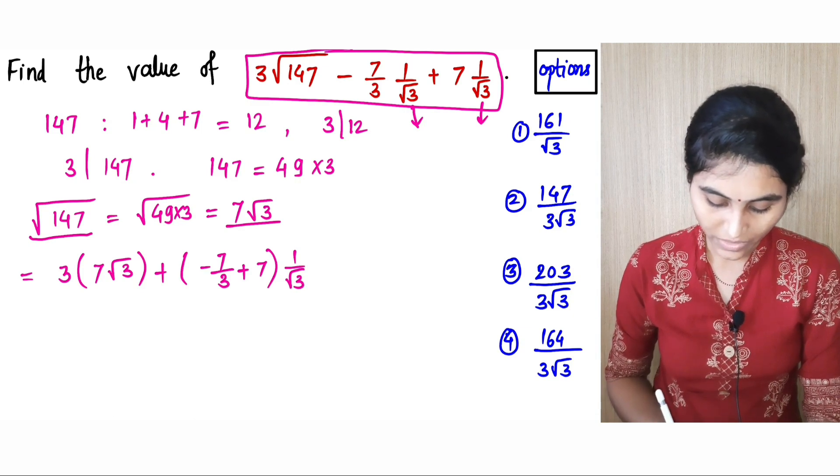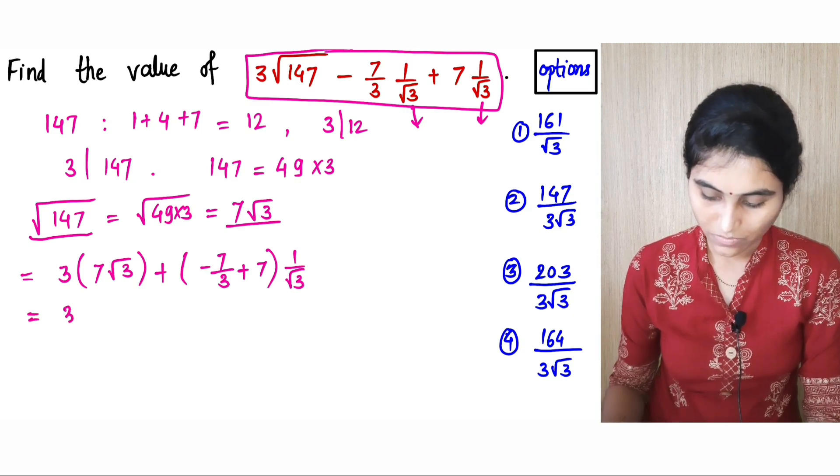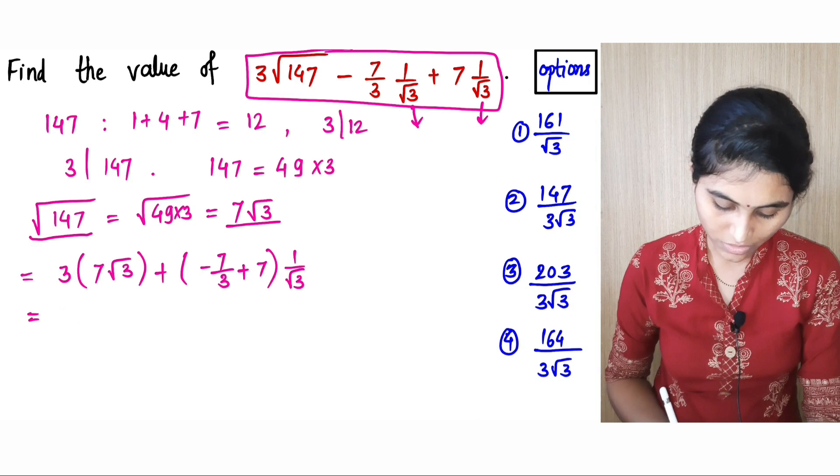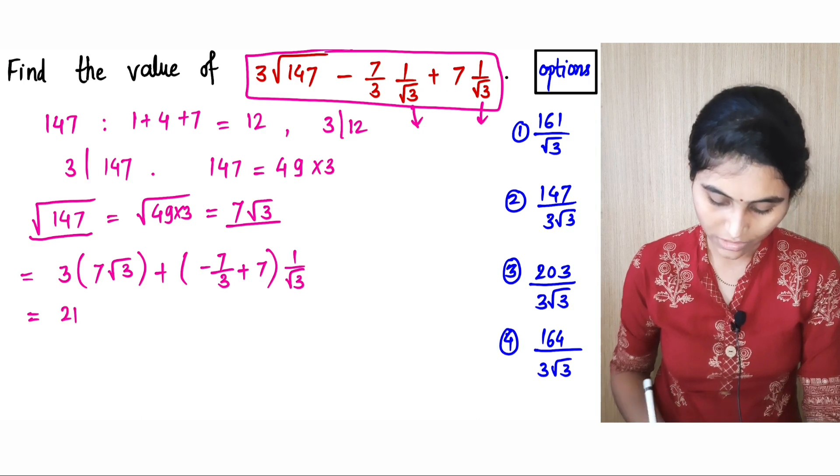Which is equal to 3 times 7, so this is 21 times 1 by root 3.